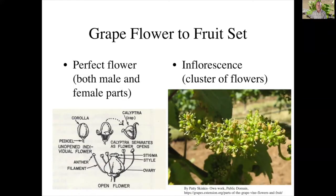To begin with, we need to talk about the flower structure as we know it. Grapevines have what we call a perfect flower — at least commercial grapevines do — and a perfect flower has both male and female parts.